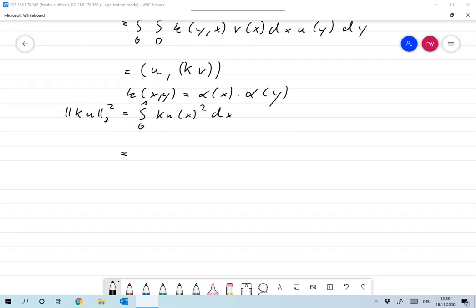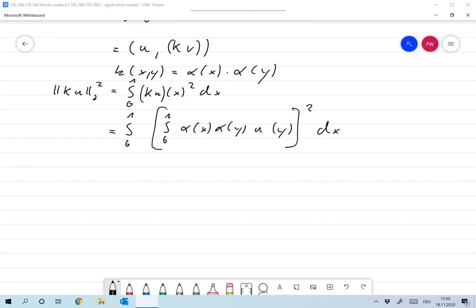Now, plugging in the definition of K and setting the small k as α(x) times α(y), we arrive at integral 0 to 1, integral 0 to 1, α(x), α(y) squared, u(y)² dx. And now I can, of course, take the α(x) out.